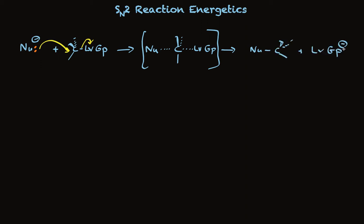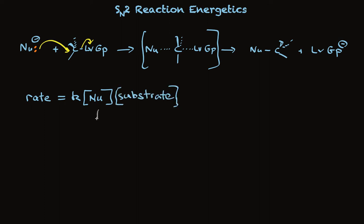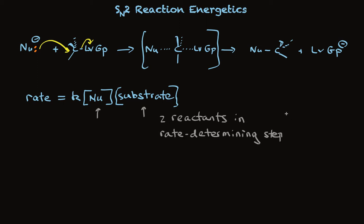The kinetics of this process are simple to consider. The rate is equal to some rate constant times the concentration of the reactants in the slow step, and there's only one step, so it is the slow step. So we're looking at the concentration of the nucleophile and the concentration of the substrate. There's one reactant and a second reactant in the rate equation — two reactants in the rate-determining step — which makes this a second-order reaction.